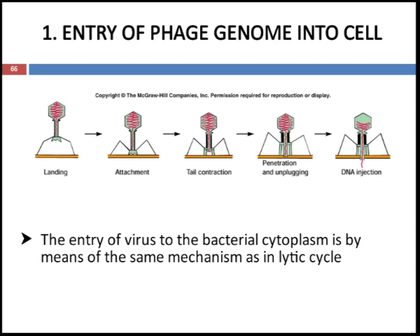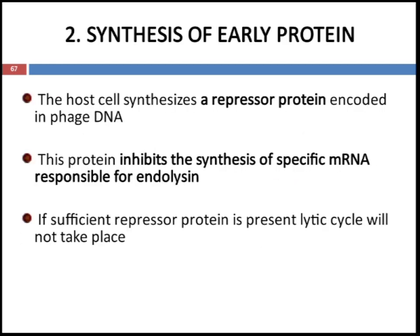In the first step, entry of the phage genome into the cell, the virus enters the bacterial cytoplasm by the same mechanism as the lytic cycle. There is a random collision in which tail fibers get attached; once attached the attachment is irreversible. Then there is tail contraction and penetration of viral DNA or RNA into the cell, followed by viral DNA injection into the bacterial cell.